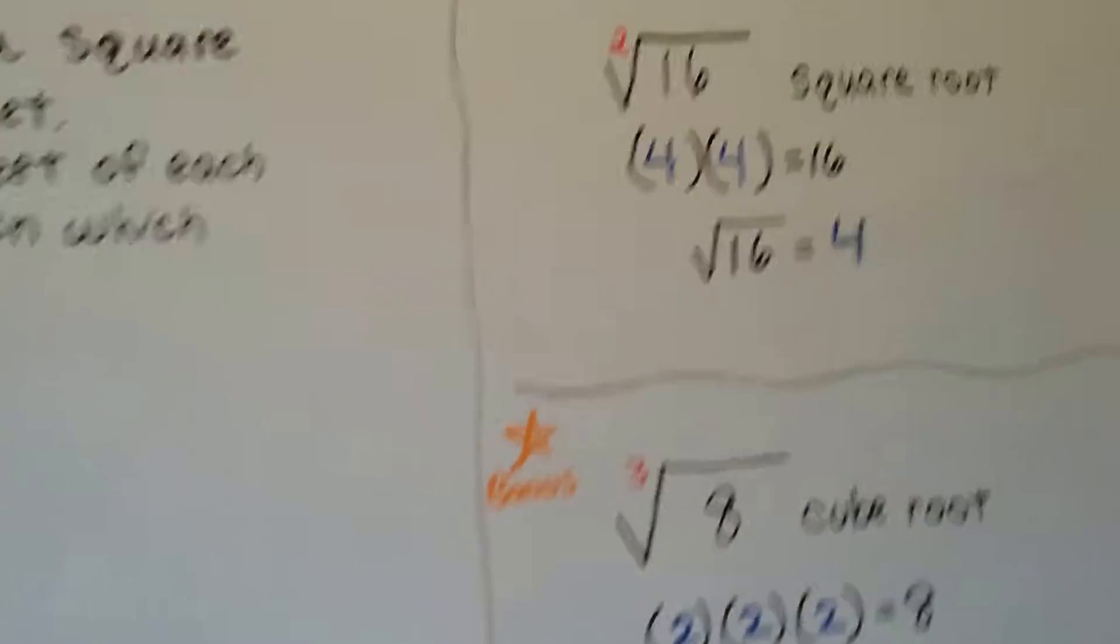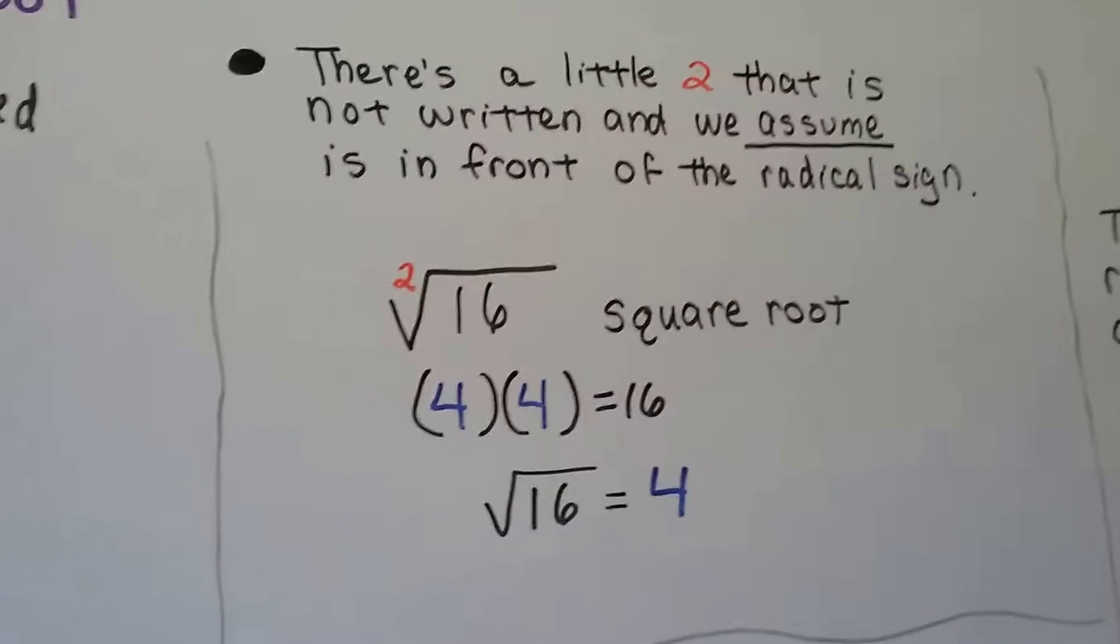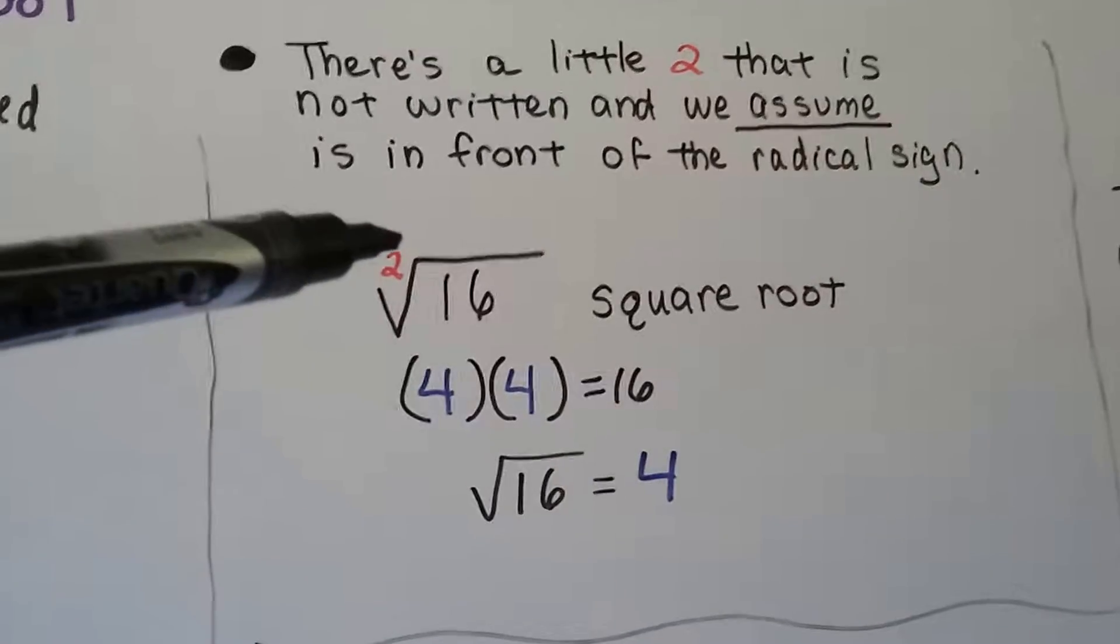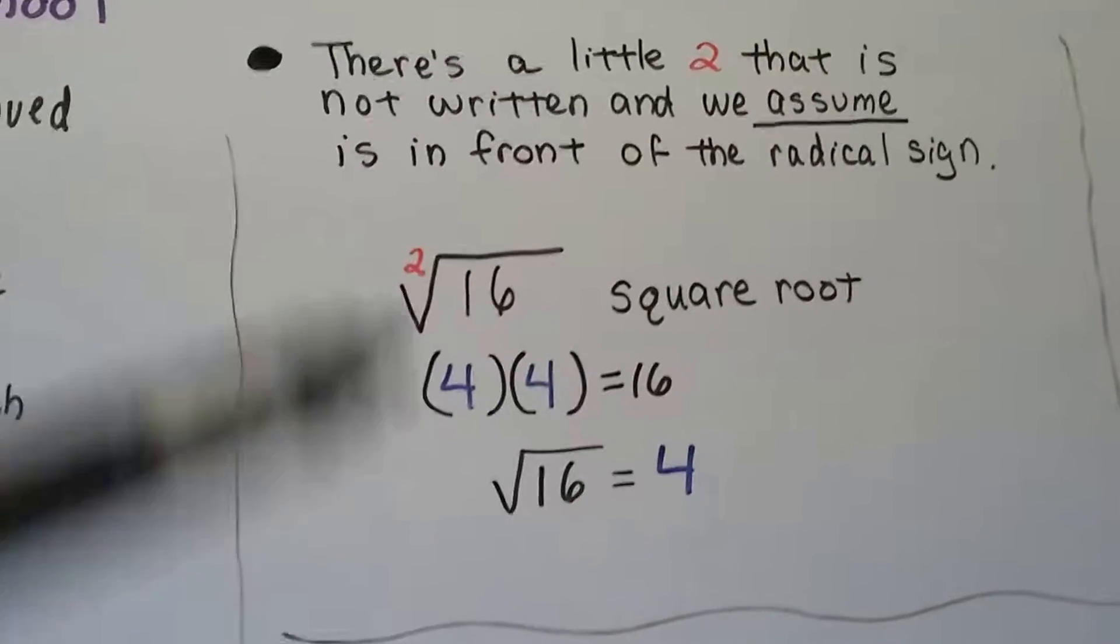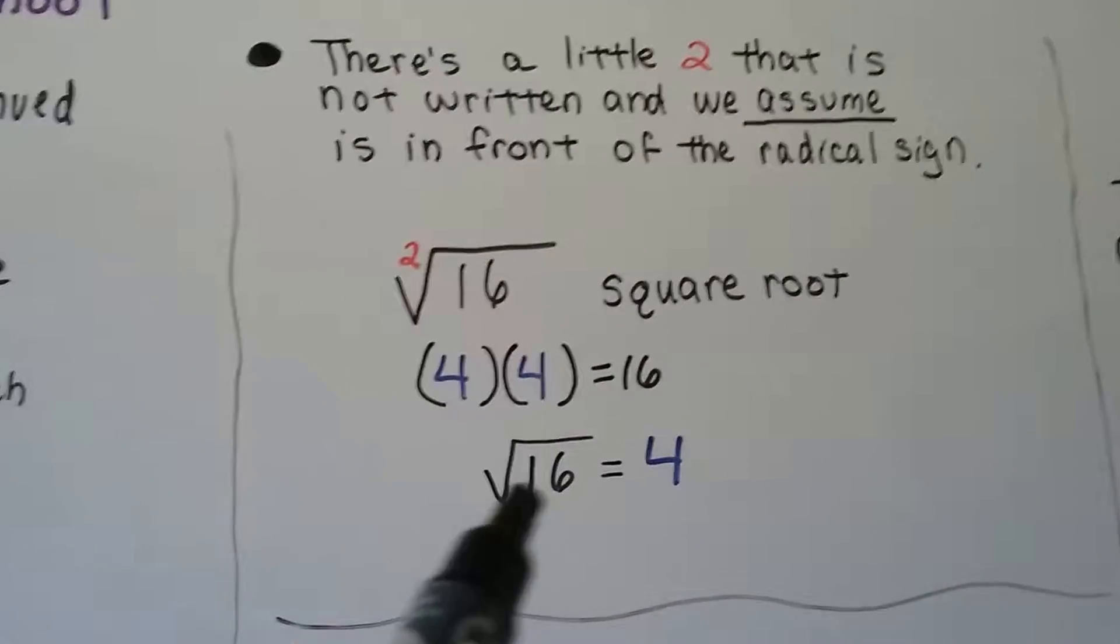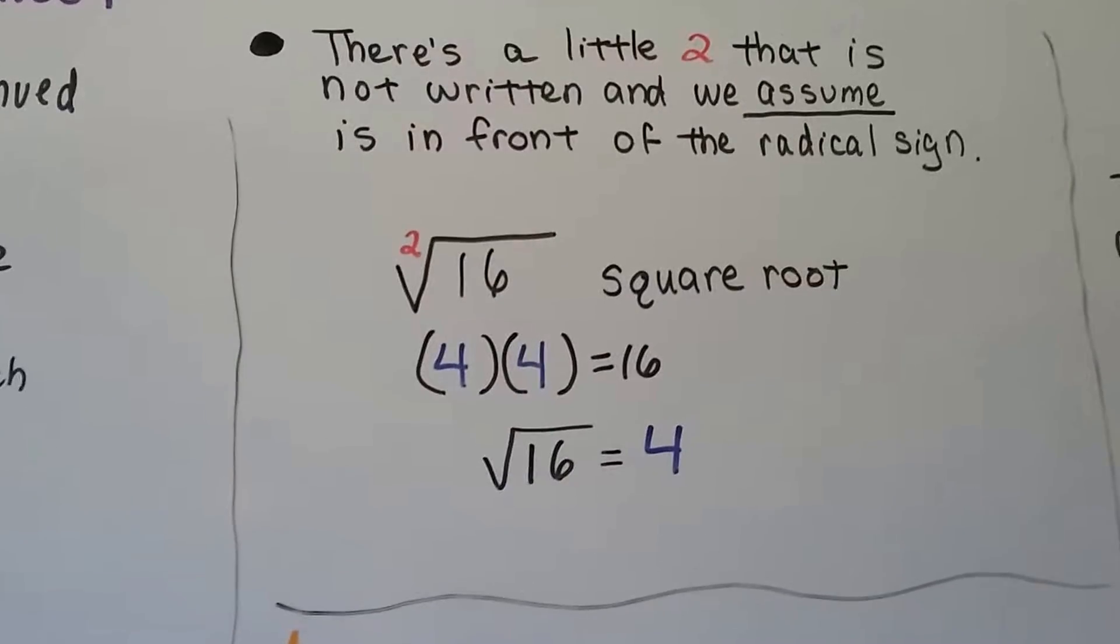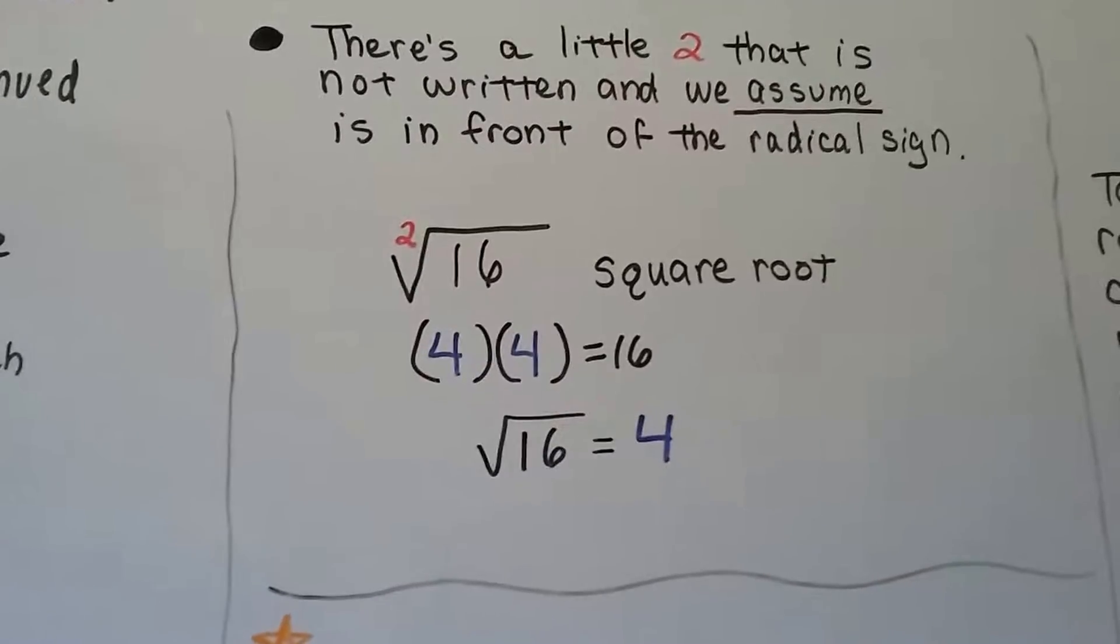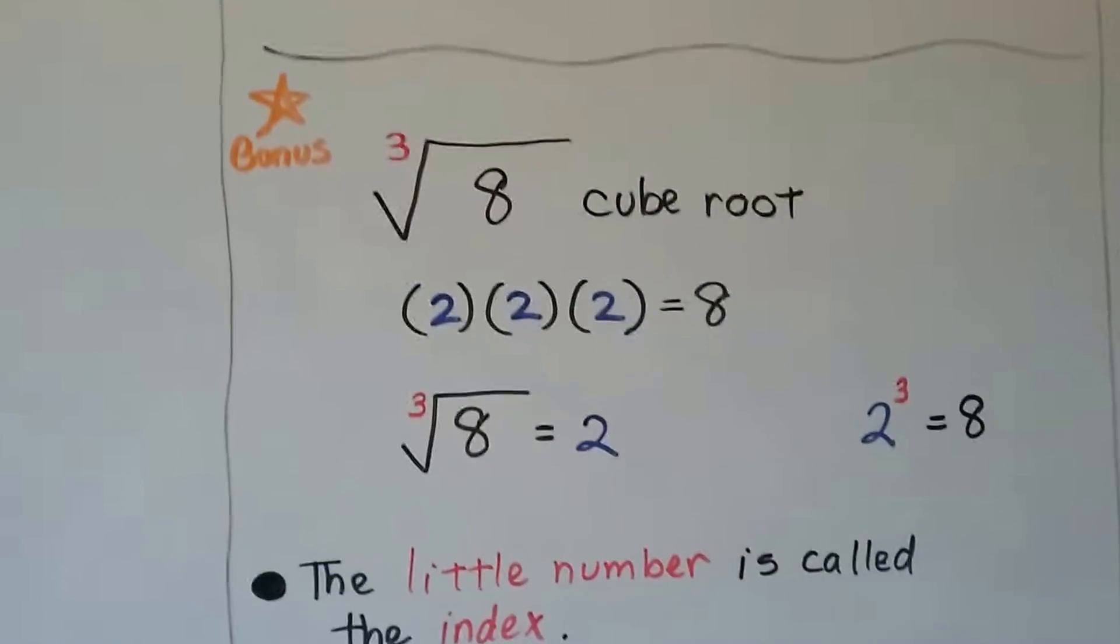Now, here's something else that you probably don't know. Did you know that there's a little 2 that is not written and we assume it's in front of the radical sign up here? This is the square root of 16. There's actually a little 2, but we don't write it. We just assume it's there and we write the square root of 16 equals 4. But there's actually a little hidden 2 there. Isn't it silly how they do that? They have a hidden 2, hidden 1s for the exponents. A 1 is a coefficient.